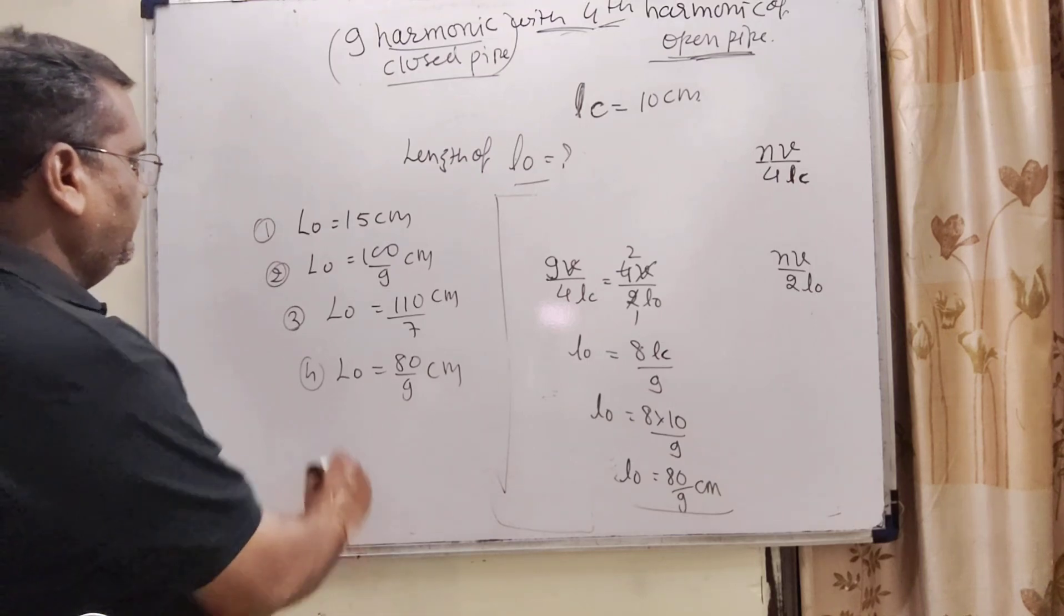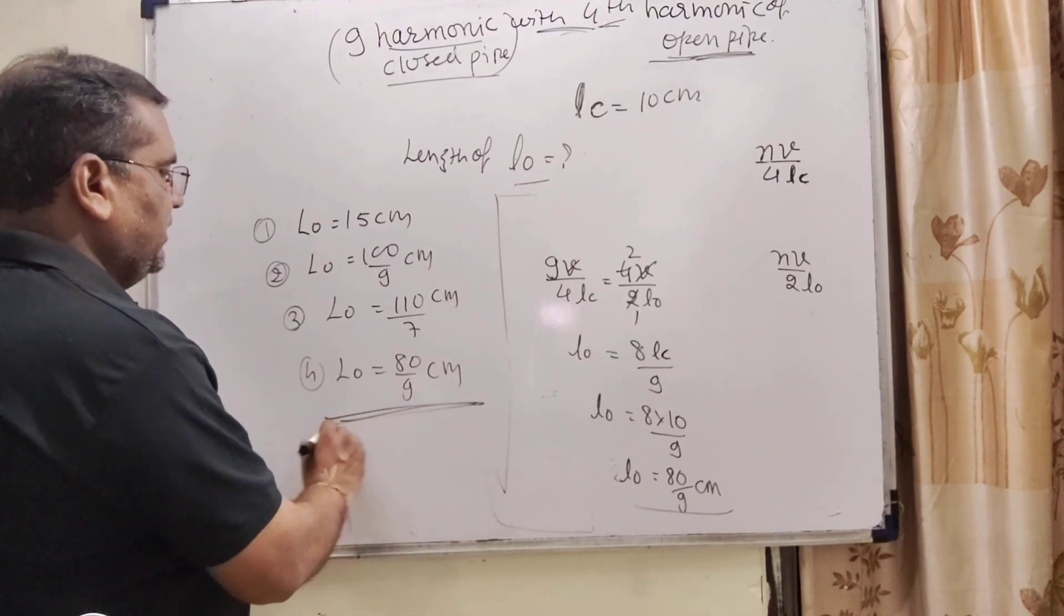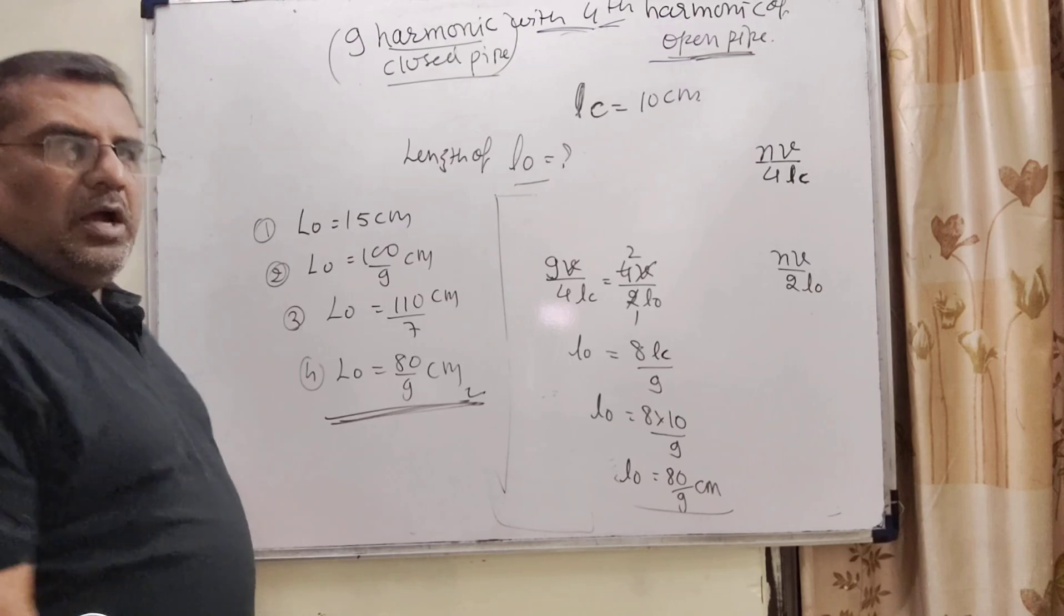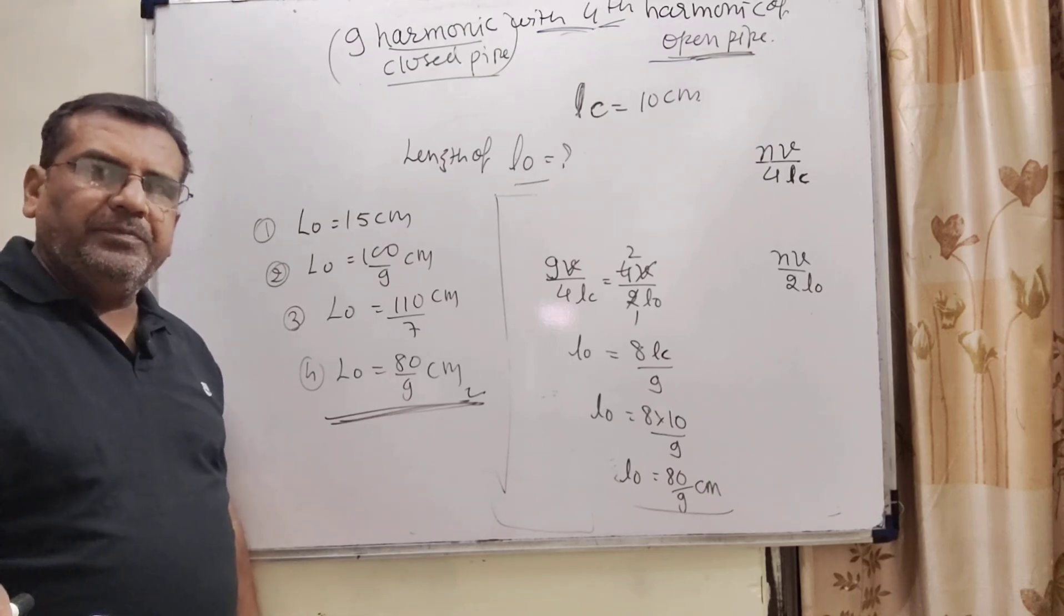So, here the option fourth, means D option, is correct. I hope you understood this question. Thank you.